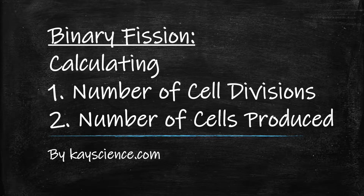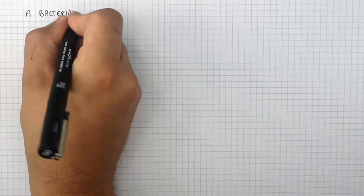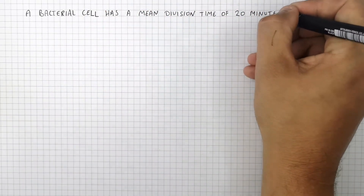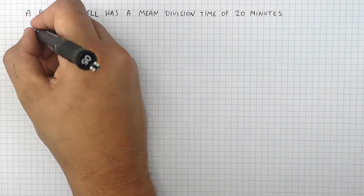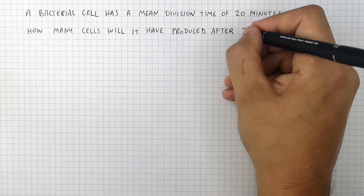Binary Vision. Calculate the number of cell divisions and the number of cells produced. This is the problem you will learn how to solve. Press pause to attempt it. The method and the answer will follow. A bacterial cell has a mean division time of 20 minutes. How many cells will it have produced after 2 hours?